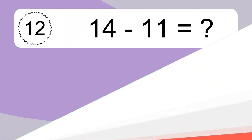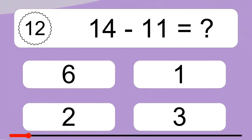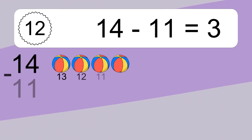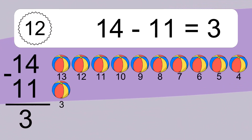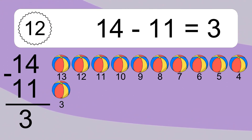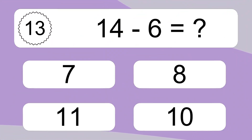14 minus 11 equals what? 14 minus 11 equals 3. Let's count it: 13, 12, 11, 10, 9, 8, 7, 6, 5, 4, 3.